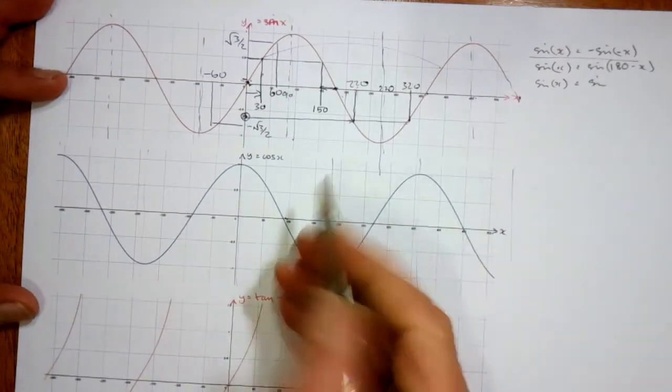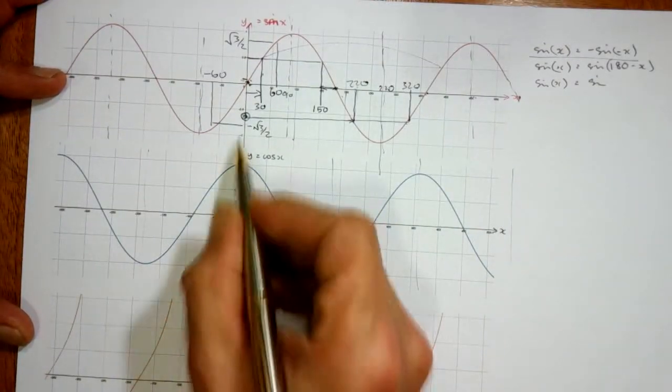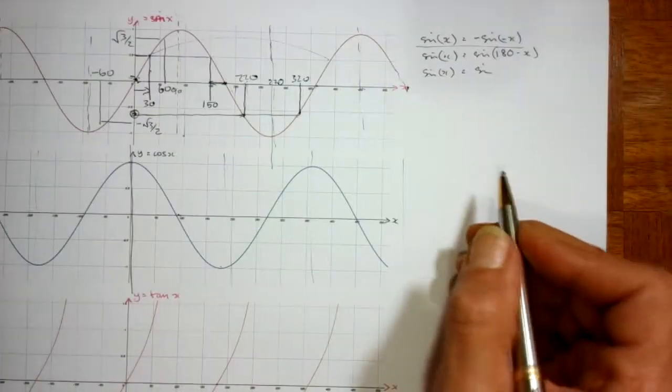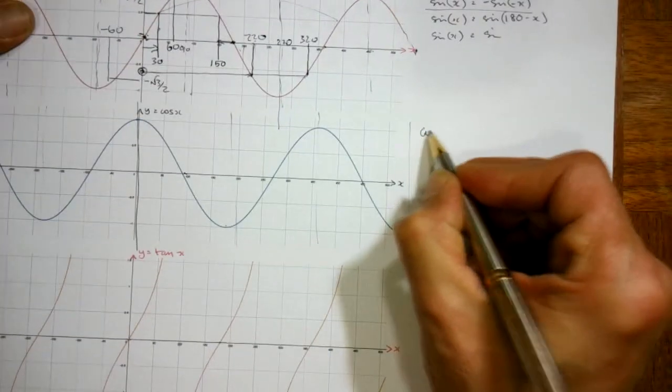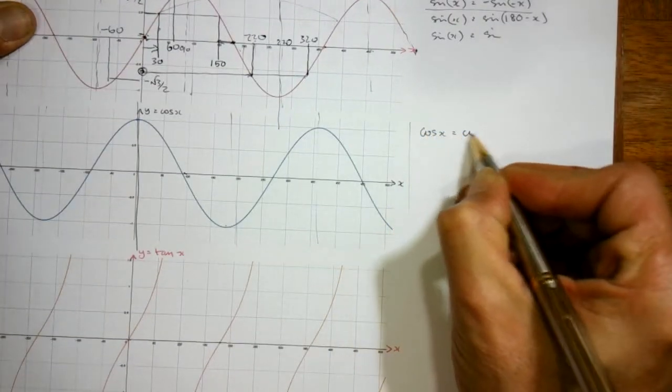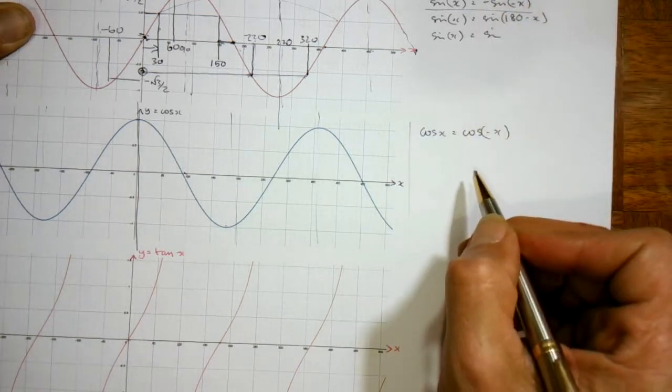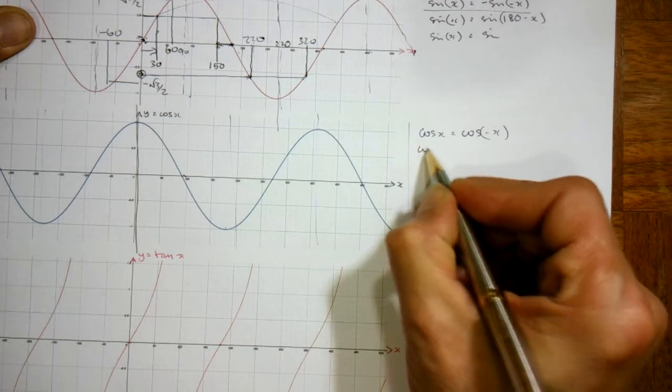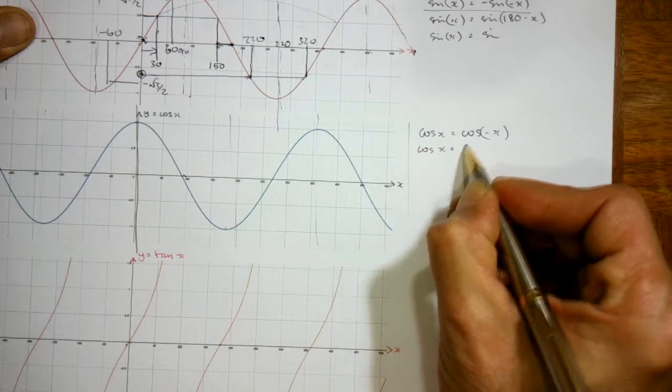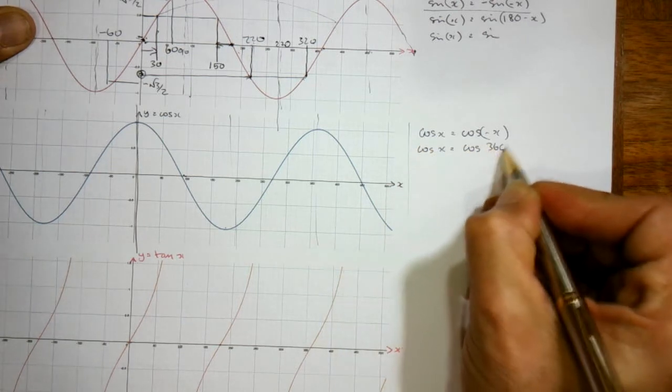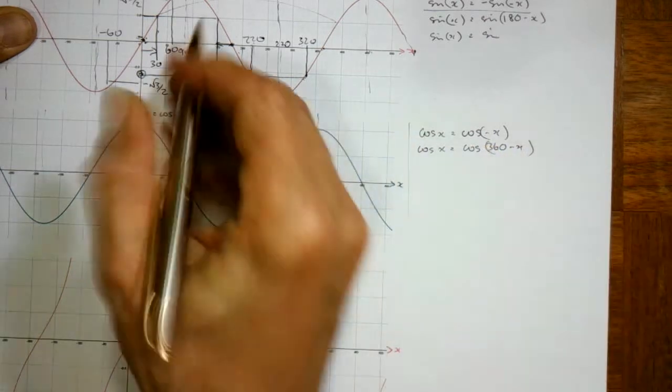And we've got similar things for the cos graph. Because the line symmetry is 0, then we can write that the cos of x is the same as cos of minus x. We don't have to change the sign like we did for sine. We know that cos of x is equal to cos of 360 minus x for the same reason that it was 180 minus x on this one.